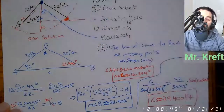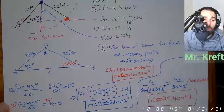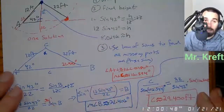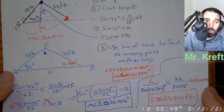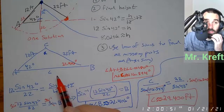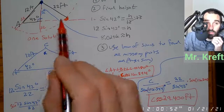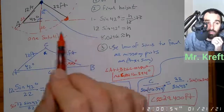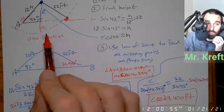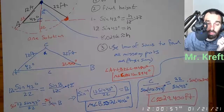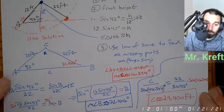We're running out of time. If you want to come back to this, come back to this, but I have to show you a two-solution example. Basically, you set it up, find the height, see how many solutions you have, and then solve the triangle using law of sines and the angle sum.